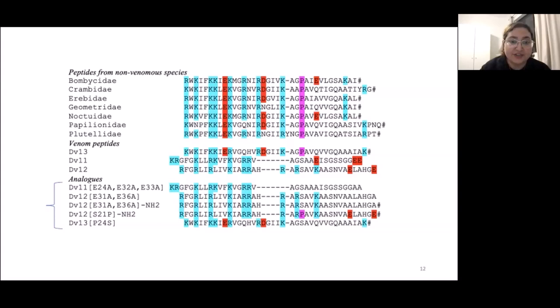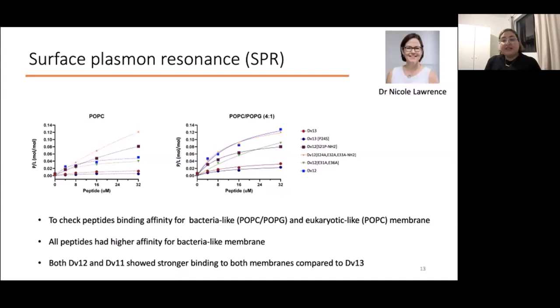We thought that because DV11 and 12 that are causing pain might confer a binding preference for the eukaryotic-like membranes, like mammal-like membranes, compared to the bacterial-like membrane. To test this, we tested DV13 and DV12 and all the analogues in between, both on POPC membrane and POPC-POPG membrane. We actually saw that this is not the case. All peptides had higher affinity for bacteria-like membranes still, and both DV11 and 12 showed a stronger binding to both membranes compared to ancestral DV13.